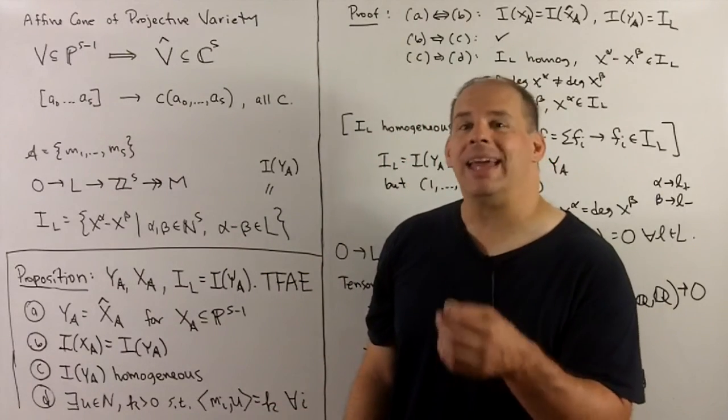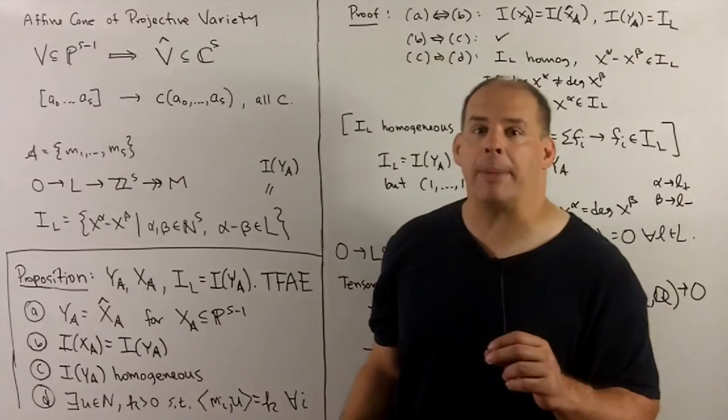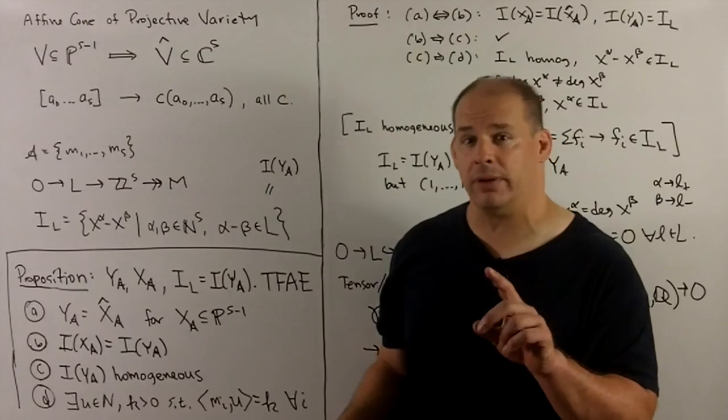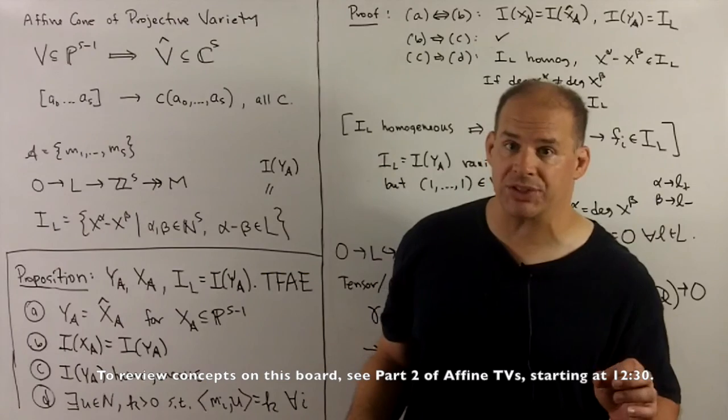Now what about xA, yA, and the cone over xA? That's going to be a proposition. Before we do that, we need to remind ourselves of machinery for affine toric varieties. You may need to go back and review this.